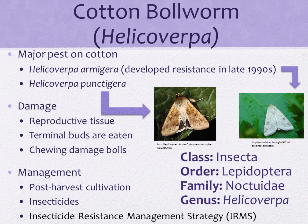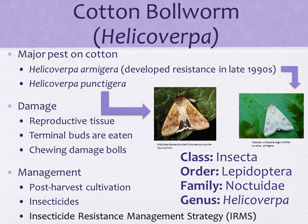Cotton bollworm belongs to class Insecta, order Lepidoptera, family Noctuidae, and genus Helicoverpa, and this remains a major pest on cotton. There are two species: Helicoverpa armigera and Helicoverpa punctigera. They are very similar in both appearance and the damage they cause to cotton. In cotton, all stages of plant growth may be attacked, but reproductive tissue is preferred. Seedlings can be tipped out when terminal buds are eaten, chewing damage to squares and small bolls may cause them to shed, and chewing damage to maturing bolls may prevent normal development and can lead to secondary fungal infections such as boll rot. Therefore, regular monitoring of the crop for the presence of larvae and damage is necessary in order to make timely decisions on control.